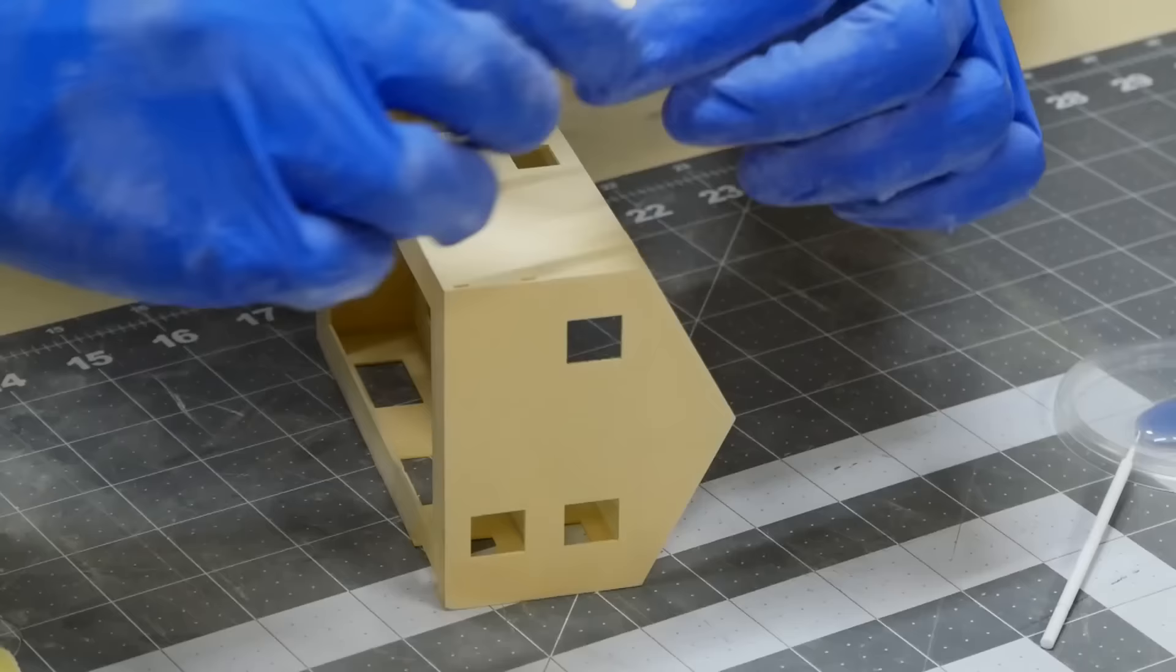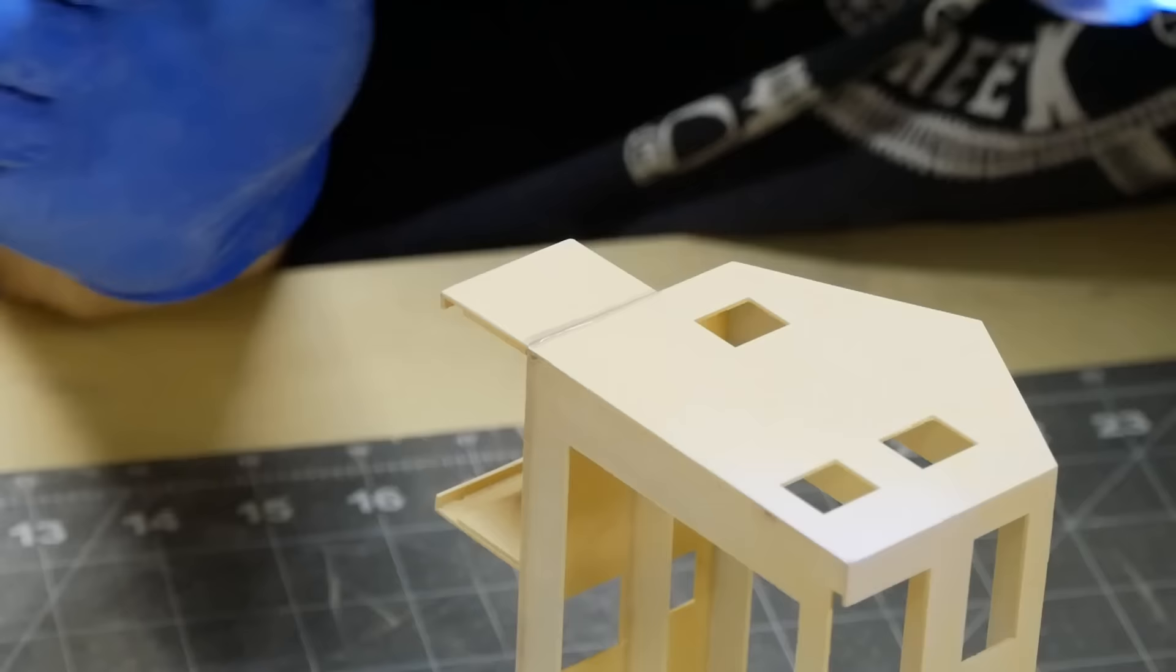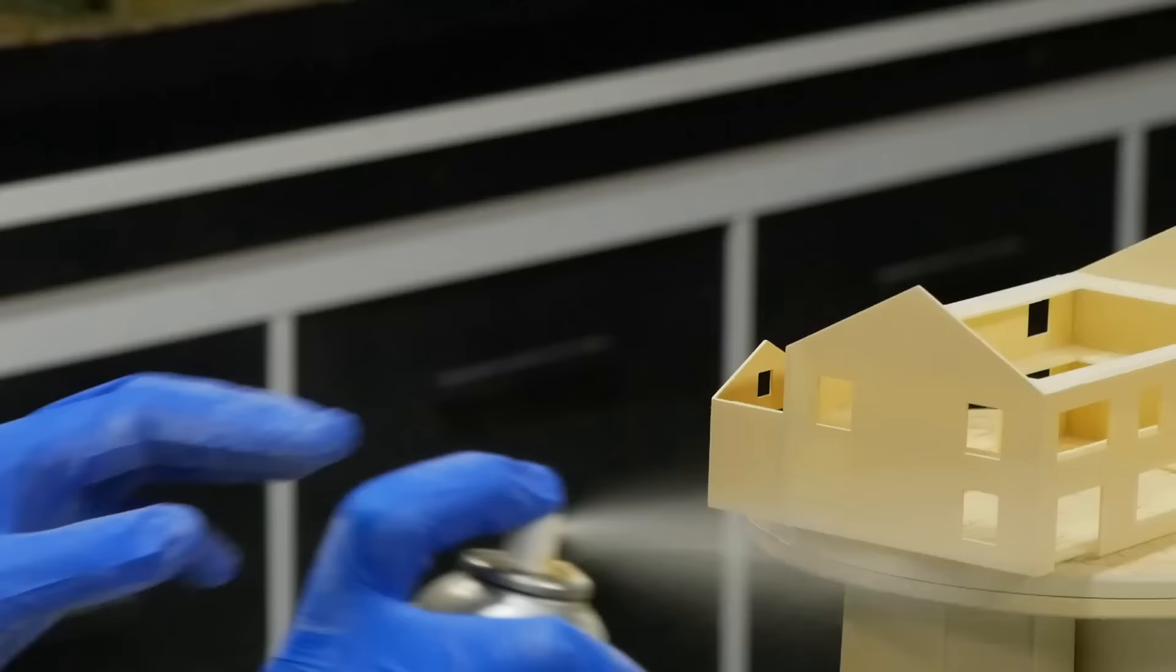Now the garage is attached the same way as the rest of the model is assembled. There was quite a large gap along one edge, however using the resin gap filling method once sanded and painted the gaps virtually disappear.